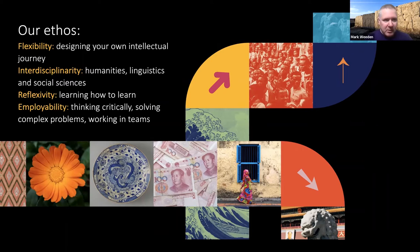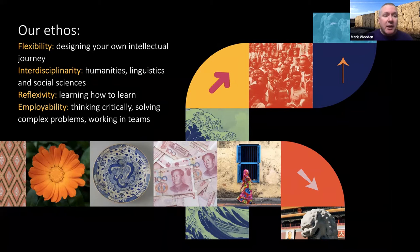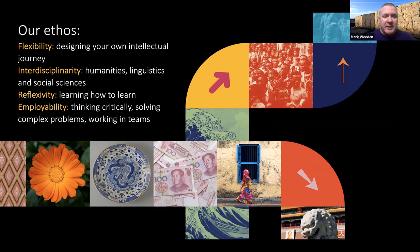At SOAS, there are four principles underlying the education in Global Liberal Arts. We have flexibility — you're able to design your own intellectual journey on this degree. Interdisciplinarity is really at the heart of it, so the degree combines humanities, linguistics, and social sciences. Reflexivity, which is all about learning how to learn. And employability — thinking critically and solving complex problems, working in teams.